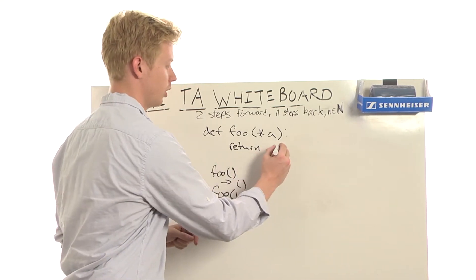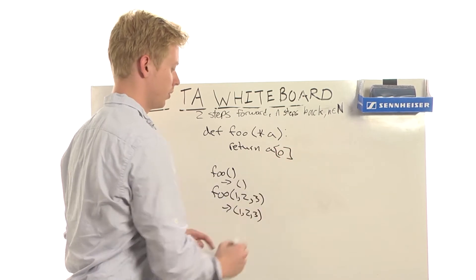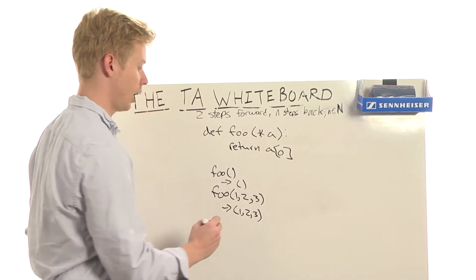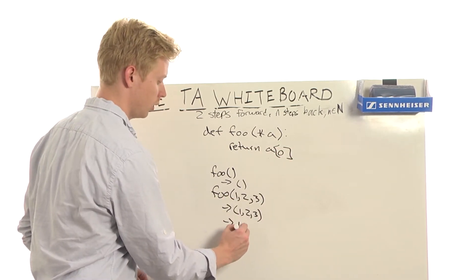If I were to change this to return a[0], and I were to call foo with 1, 2, 3 again, it would just return the number 1.